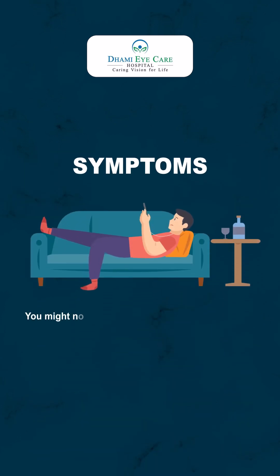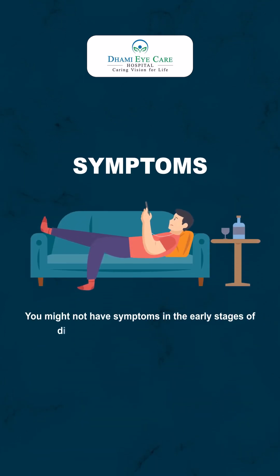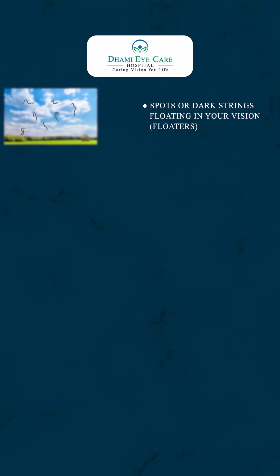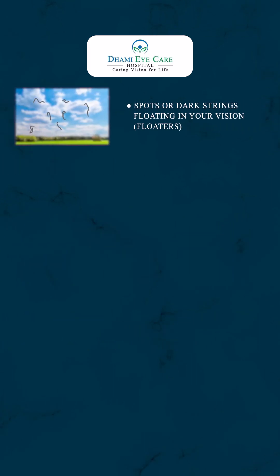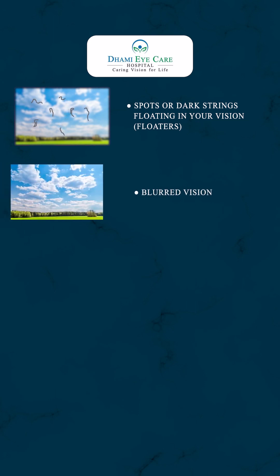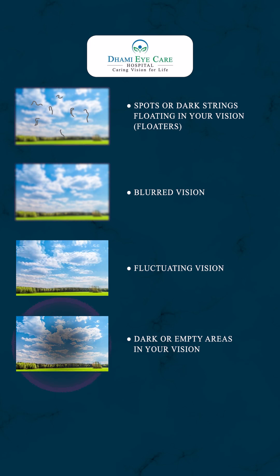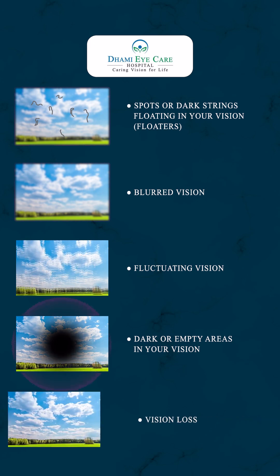You might not have symptoms in the early stages of diabetic retinopathy. As the condition progresses, you might develop spots or dark strings floating in your vision, also known as floaters, blurred vision, fluctuating vision, dark or empty areas in your vision, or vision loss.